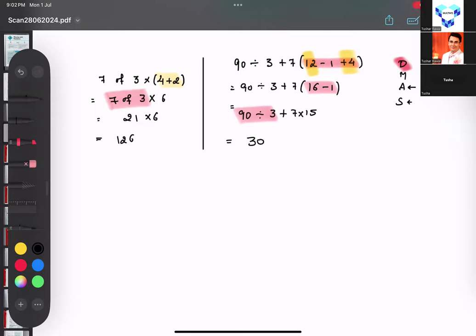Can you see I am using a highlighter? You can also use a highlighter so that your brain is focused. So plus 7 multiplied by 15. Now tell me what should I focus? Division is done, after division what comes?